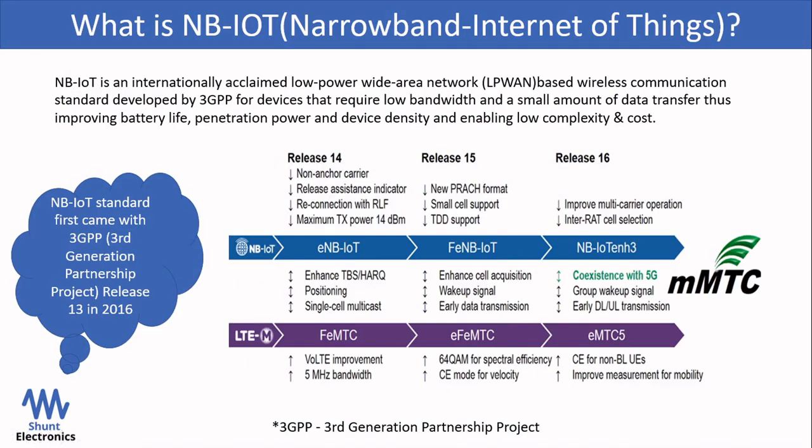IoT requires a network that can transmit data over a long range with low power and at a low bit rate. The cellular networks like 3G, 4G, and 5G were not optimized for this. So the cellular body — that is, the Third Generation Partnership Project (3GPP) — came up with the NB-IoT standard in Release 13 in 2016. With Release 14 and 15 they updated the standard of NB-IoT, and with Release 16 in July 2020 they said that NB-IoT will coexist with 5G. So we can expect a life of 20 to 30 years for NB-IoT networks.